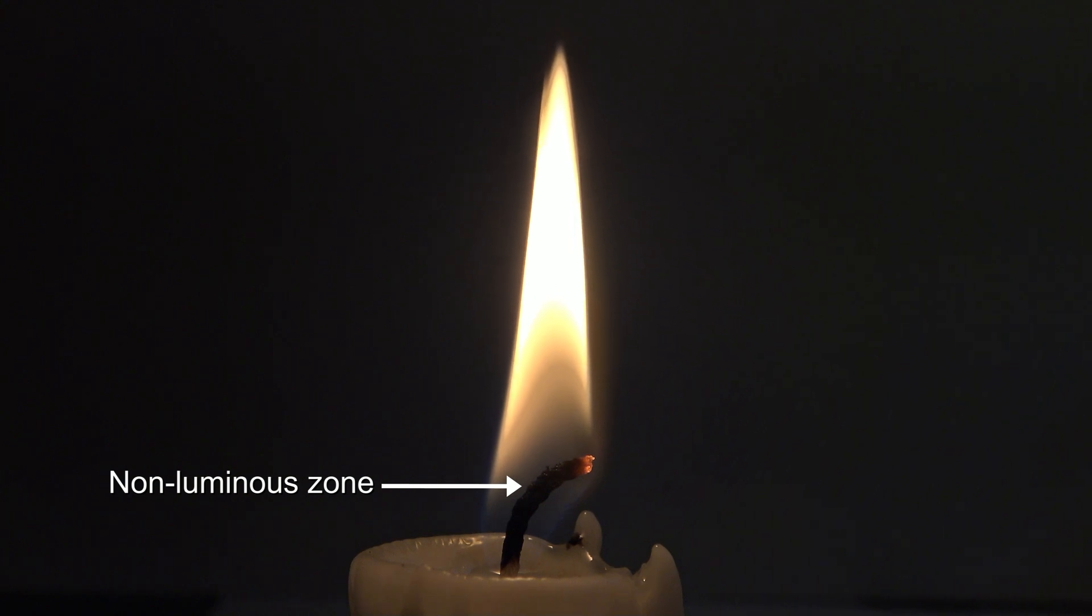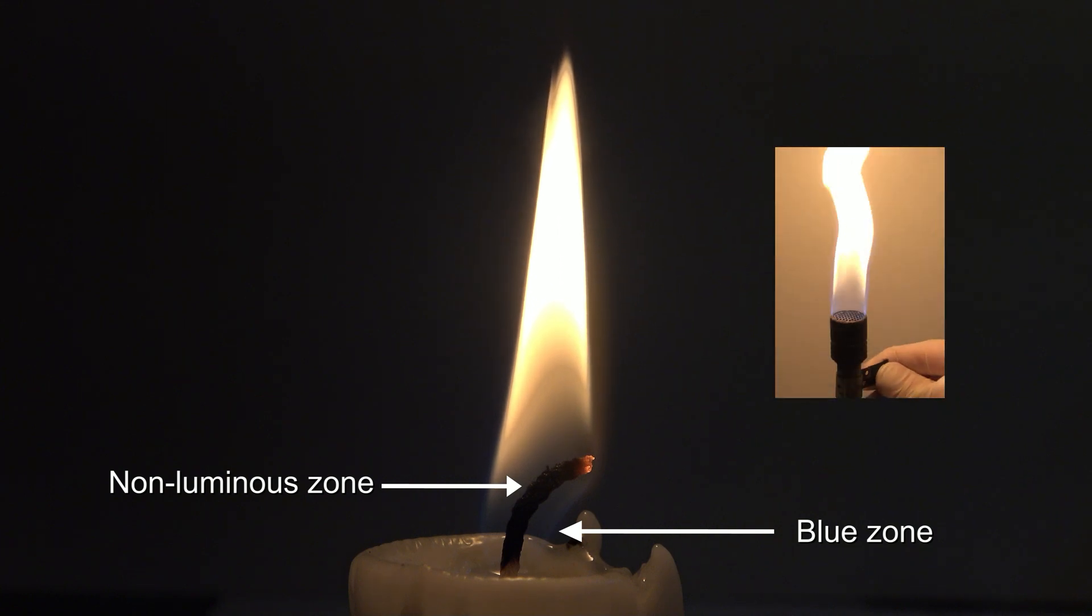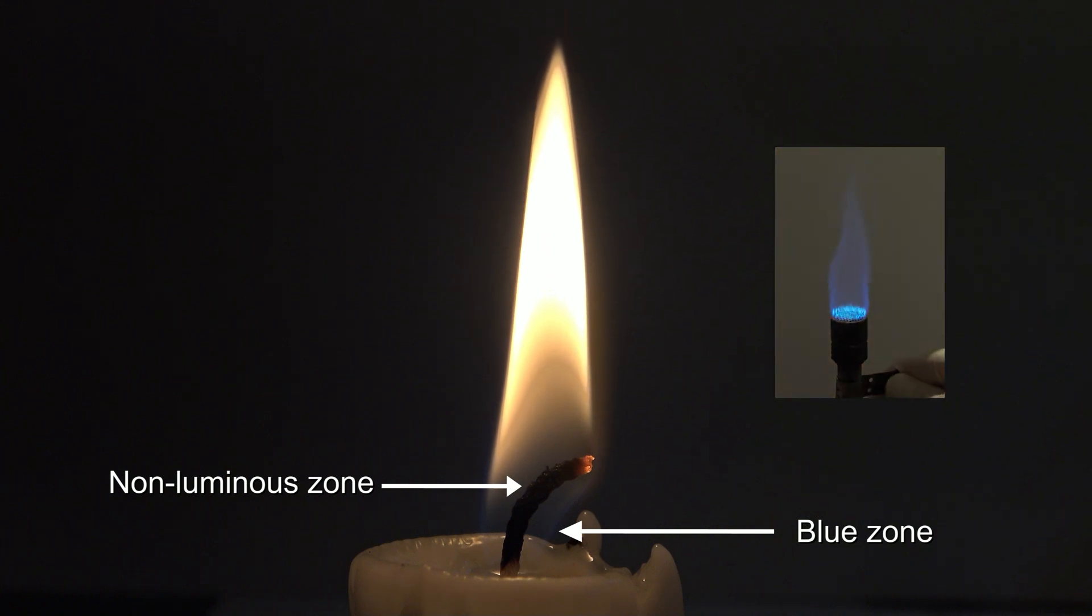Further on the outside is the blue zone. Due to convection, air is pulled to the candle from the bottom, causing this part to have a high amount of oxygen. This leads to the wax being oxidized completely, making the flame become blue. An example for this effect is a burner with an open air intake.